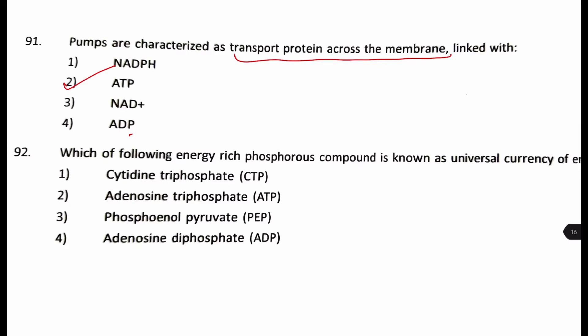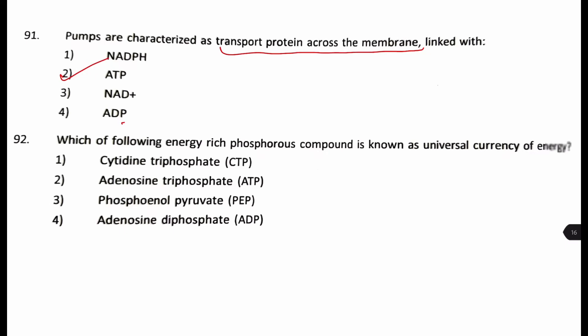Which of the following energy rich phosphorus compound is known as the universal currency of energy, right? We have been learning this since class 5 that the energy currency of a cell is ATP. So, our answer is number two, that is adenosine triphosphate.